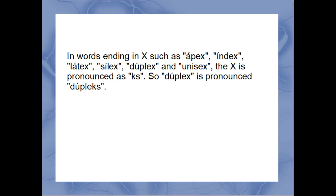In words ending in X, such as Apex, Index, Latex, Silex, Duplex, and Unisex, the X is pronounced as KS. So Duplex is pronounced D-U-P-L-E-K-S.